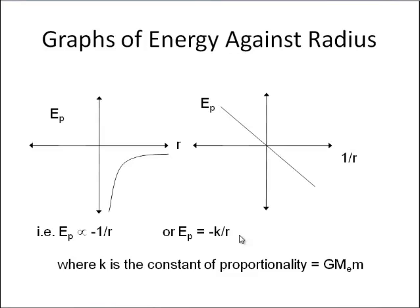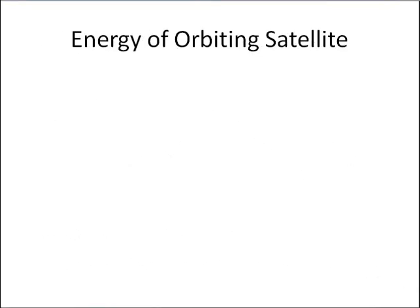k is the constant of proportionality, and we can work that out and recognise it's going to be equal to G×M_Earth×m. So that's the gravitational potential energy.